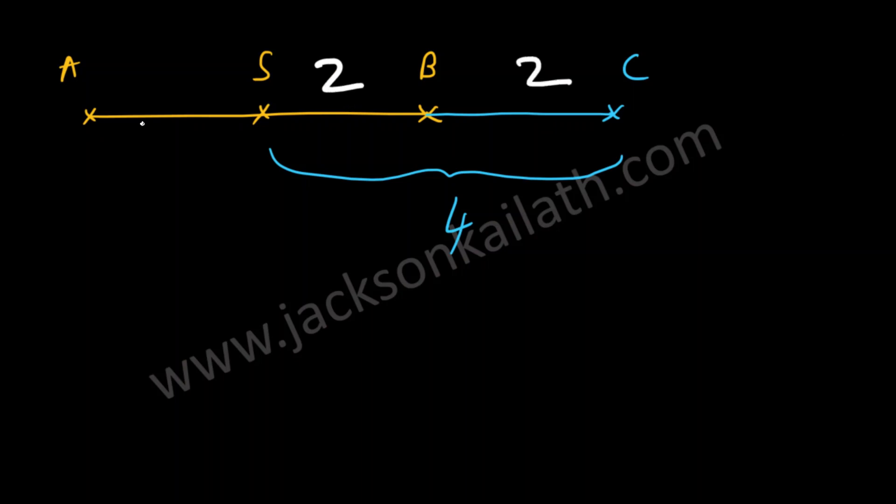And because this is two and these two are equal, because the school is midway between Abdul's house and Barb's house, so if this is two, this also has to be two.